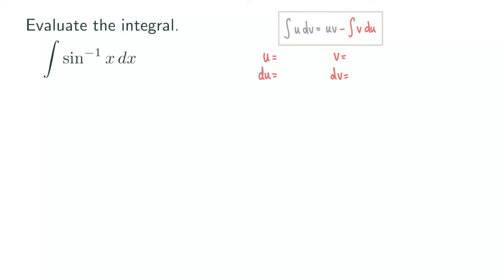So what should we let u be? Because we're integrating the sine inverse of x. If we are putting it here, that's what we are trying to find out. So there is no way that we can figure out what v is if we do not know the antiderivative of the sine inverse of x. So we can only let u be sine inverse of x. So we put that right here.